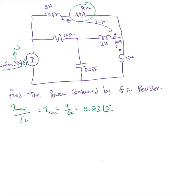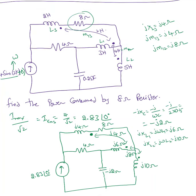Whatever angle you have after the sine term, that's the angle we write down. Now, converting the circuit into the frequency domain: the mutual inductance of 2 henry converts to j4 ohms, and another mutual inductance of 4 henry converts to j8 ohms. Since omega is 2, X_L = ωL, so based on that, everything is converted into ohms.